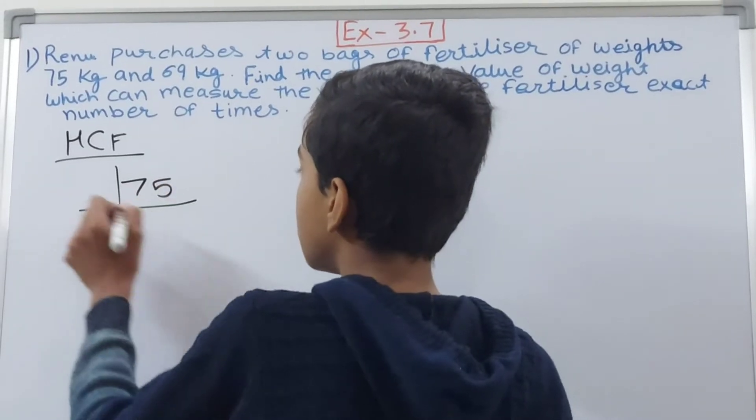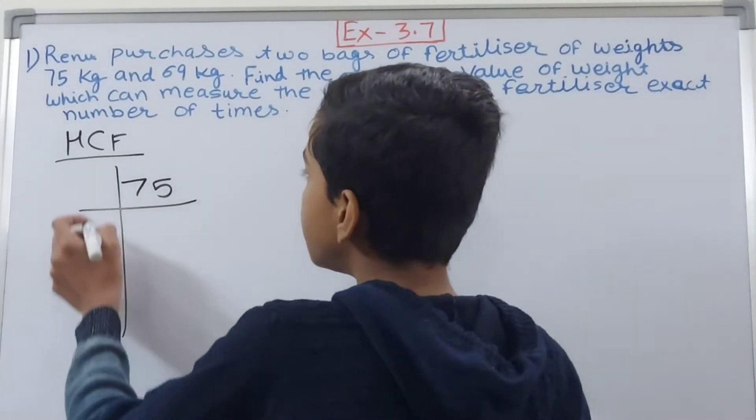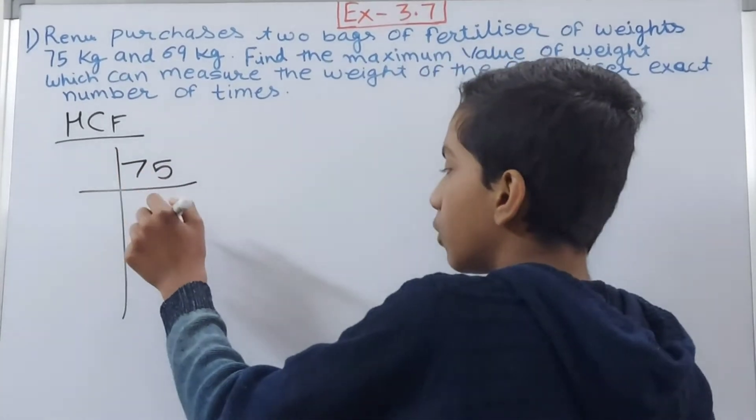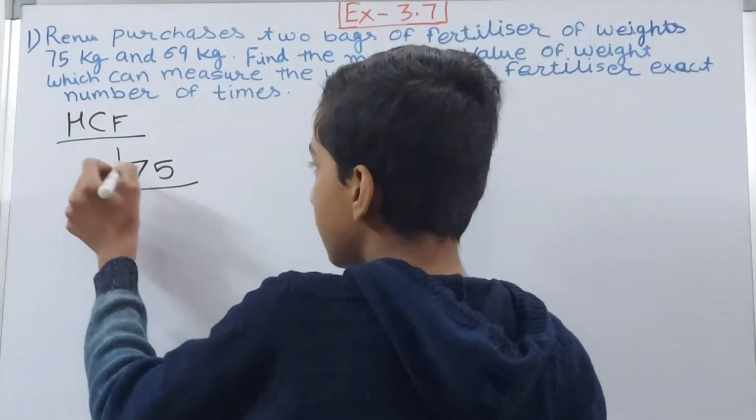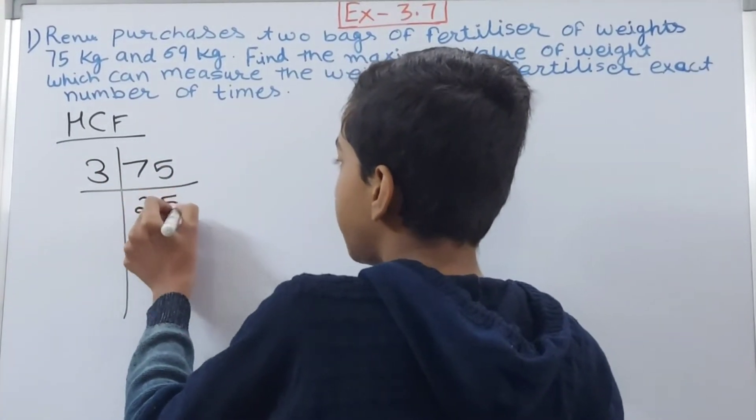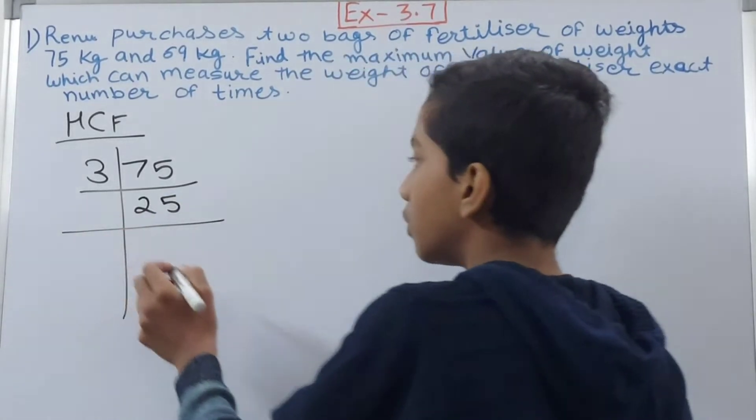So HCF, let us see. I will first find of 75 by that prime factorization method. 75, will it go by 2? No, it will not go by 2. It will go by 3, how many times? 25 times.